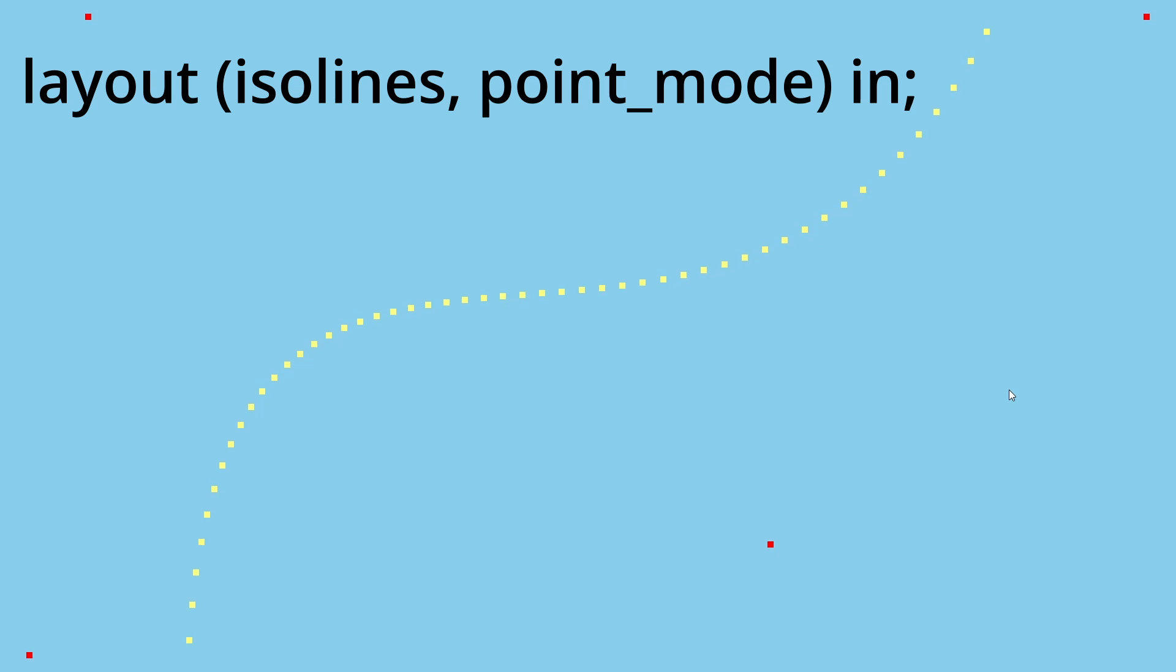And here's the result. If you run this code you can choose a control point by clicking on the keys 1 through 4 and then use the arrow keys to move the point around. If you want to see the results in points instead of lines you can add point mode to the layout specifier in the evaluation shader.